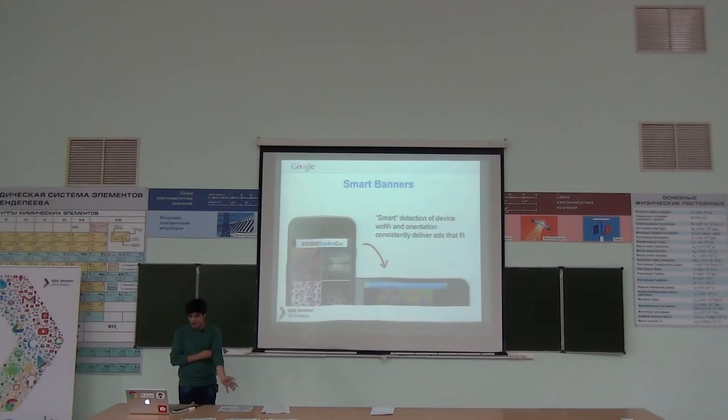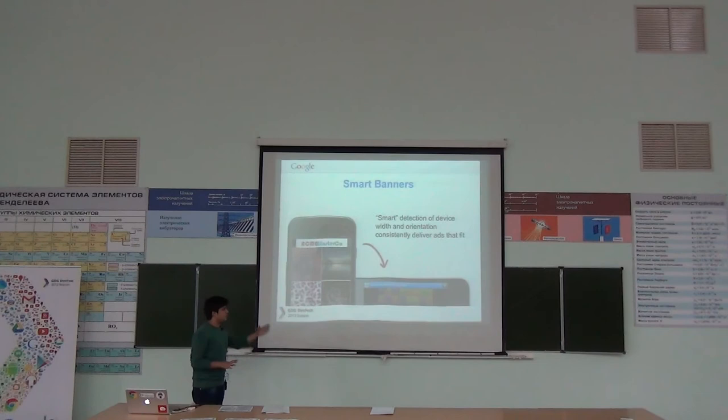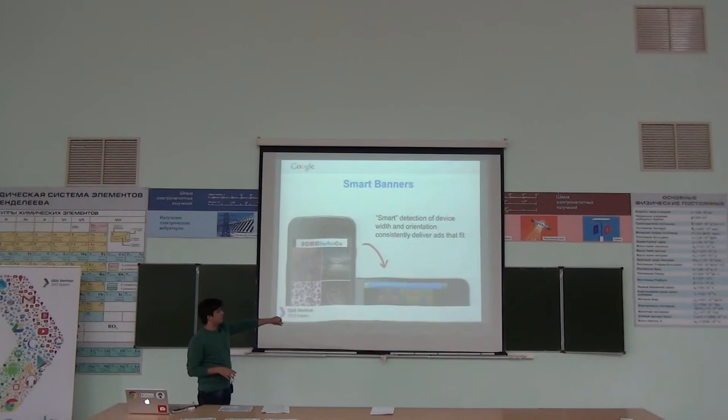One of the other features of smart banners is that when your app is rotated, it will automatically detect the orientation change. For image ads, when the device is rotated, it cannot stretch the image or it will be blurred. So the advertiser can add another ad view, and when the view is rotated it will show a text ad instead, since text is very flexible.